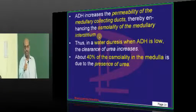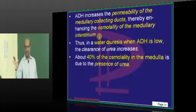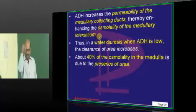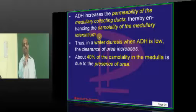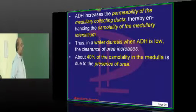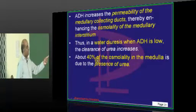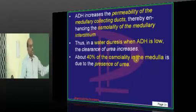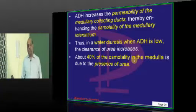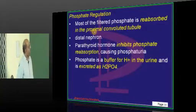The effect of ADH on urea: normally, the collecting duct is not permeable to urea, but in the presence of ADH, the medullary collecting duct is permeable to urea. About 40% of the osmolarity in the medulla is because of this urea.